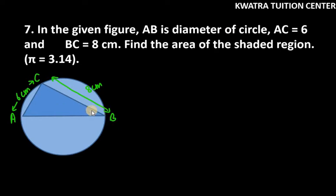So you can see that the diameter of this given circle is AB and AC is given to us that is 6 cm, BC is given to us that is 8 cm. Find the area of the shaded region. So area of the shaded region is the light blue part which we have to find.